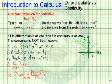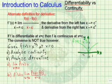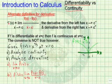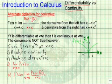Let's continue our understanding of the derivative by comparing differentiability and continuity — very important concepts in calculus. Let's begin by looking at an alternative definition for the derivative: f prime of x equals the limit as x approaches c of f of x minus f of c, divided by x minus c.